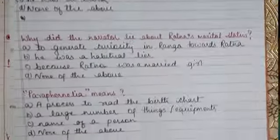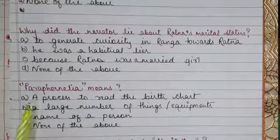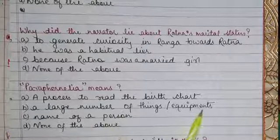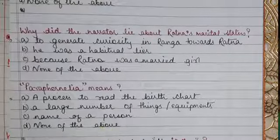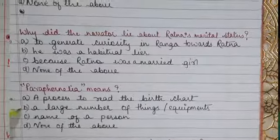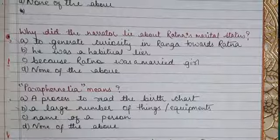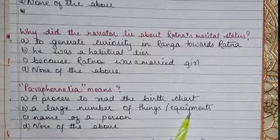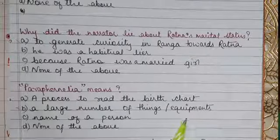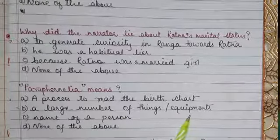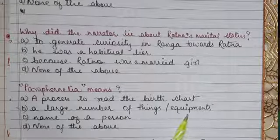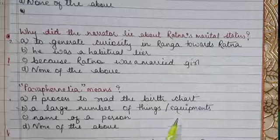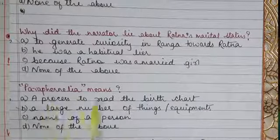Paraphernalia means: Option A: A process to read the birth chart, Option B: A large number of things or equipment, Option C: Name of a person, Option D: None of the above. Option B is correct — a large number of things or equipment. This was related to astrology — when Sastri started reading the birth chart he took out equipment like a palmyra book, cowries (shells), and so on — all of those things are included in paraphernalia.